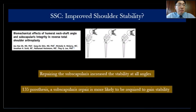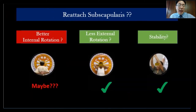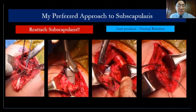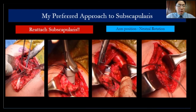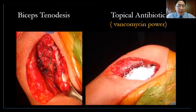The conclusion on subscapularis is: improved internal rotation is unclear, there is some limitation of external rotation, but improved stability. My approach: I prefer subscapularis repair in neutral rotation. If there is too much tension and I cannot repair it, I will not repair. I also do bicep tenodesis to the coracoid tendon, and I prefer to use local antibiotics — vancomycin powder put into the wound. I learned this from spine surgeons and have had no infections since using this technique.